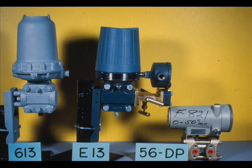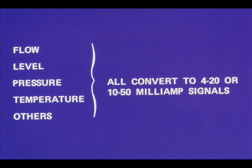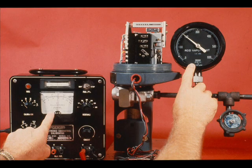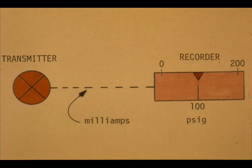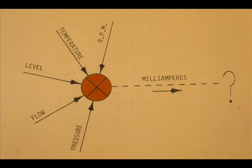Electronic transmitters use either a 4 to 20 or 10 to 50 milliampere output signal. The transmitter may measure flow, level, pressure, temperature, or other variables, but the transmitted signal is in milliamperes. For calibration purposes, we must convert these process input signals to the correct milliamp output signal. Our objective is to determine the correct milliamp output for a given process input.